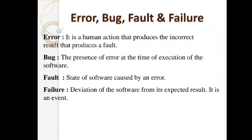Some problems faced during software testing are errors, bugs, faults, and failures. An error is a human action that produces an incorrect result and produces a fault. A bug is the presence of an error at the time of execution of the software. A fault is a state of software caused by an error. A failure is the deviation of software from its expected result.